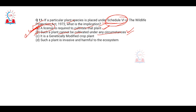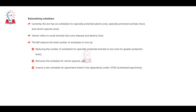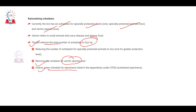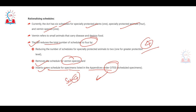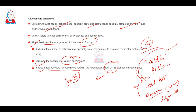Important update: the Wildlife Protection Act has been amended, and the amendment reduces the total number of schedules from six to four. The amendment removes the schedule for vermin species and inserts a new schedule for specimens listed in CITES appendices. Currently there are four schedules, not six. For full details, search 'Wildlife Protection Act amendment 2022' on Google or YouTube — Legacy IAS Academy has a detailed video by expert faculty Mr. Gaurav Sir covering all the details.